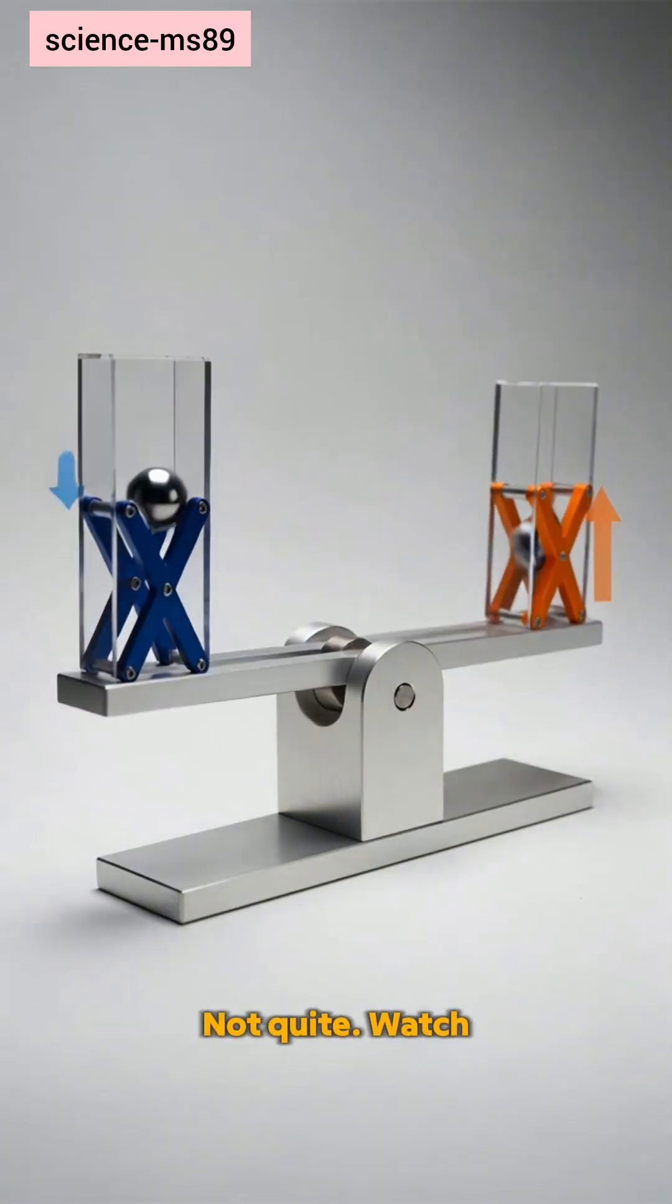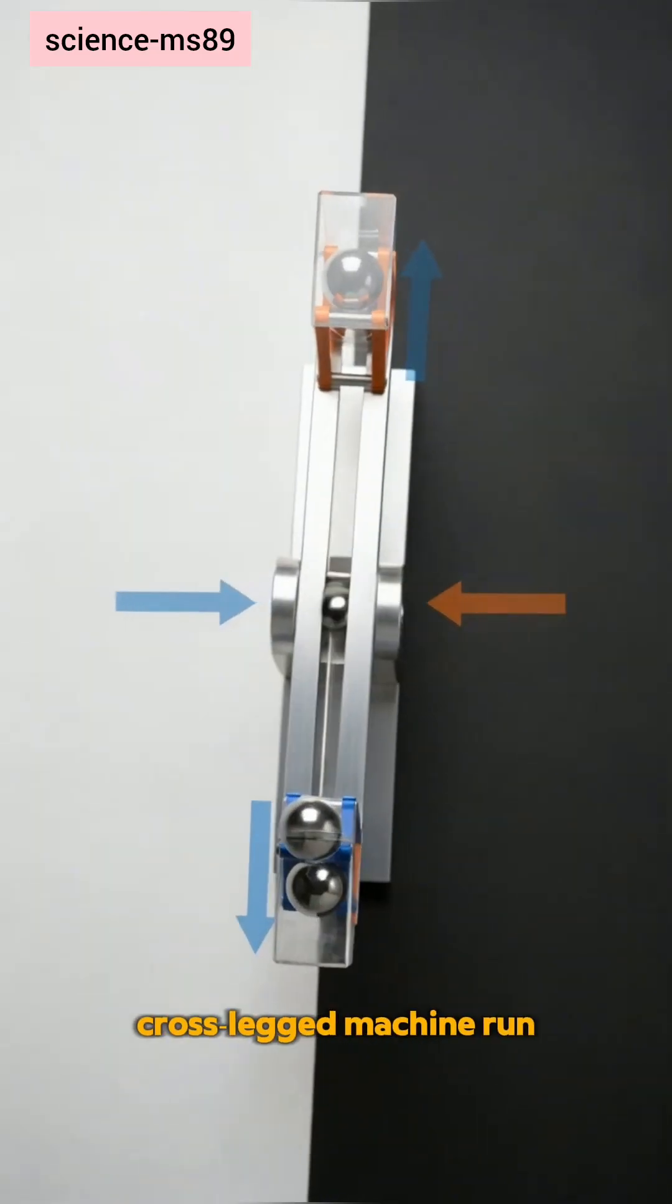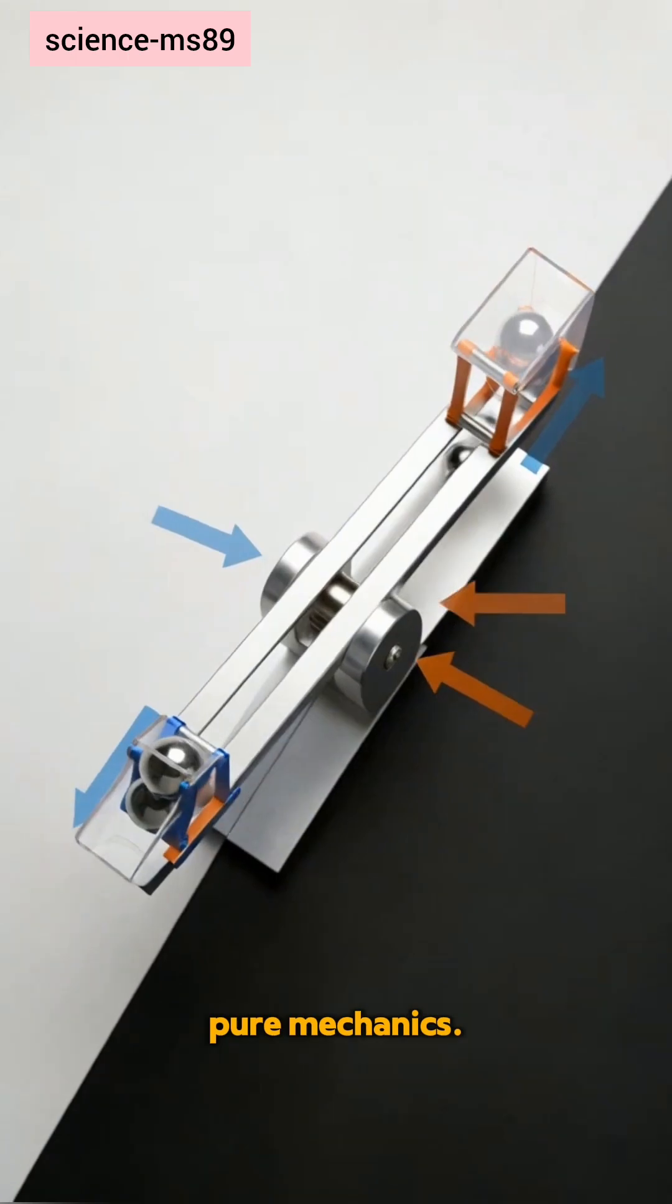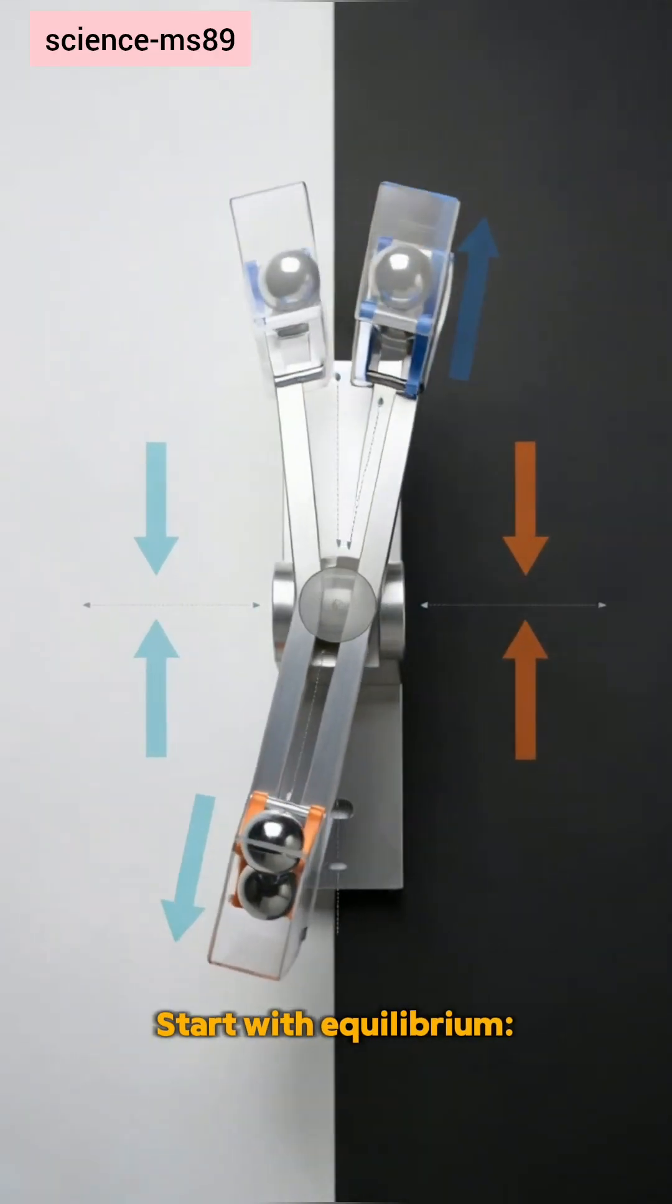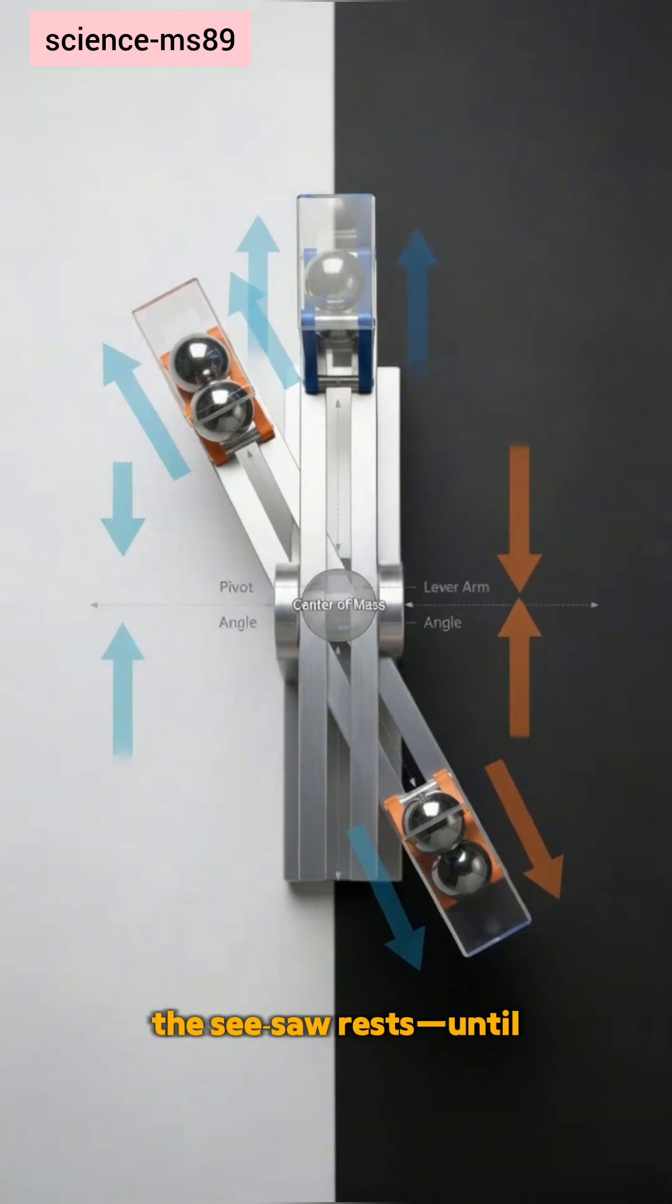Perpetual motion? Not quite. Watch this cross-legged machine run on pure mechanics. Start with equilibrium. When torques balance around the pivot, the seesaw rests.